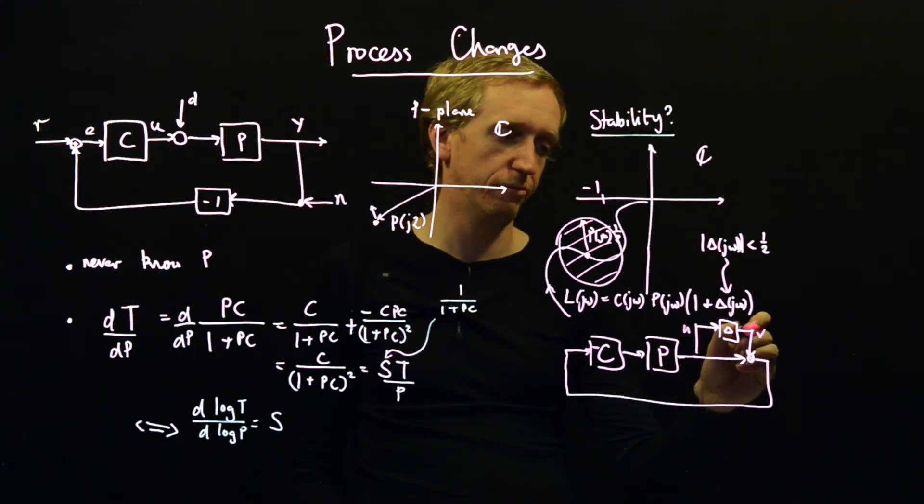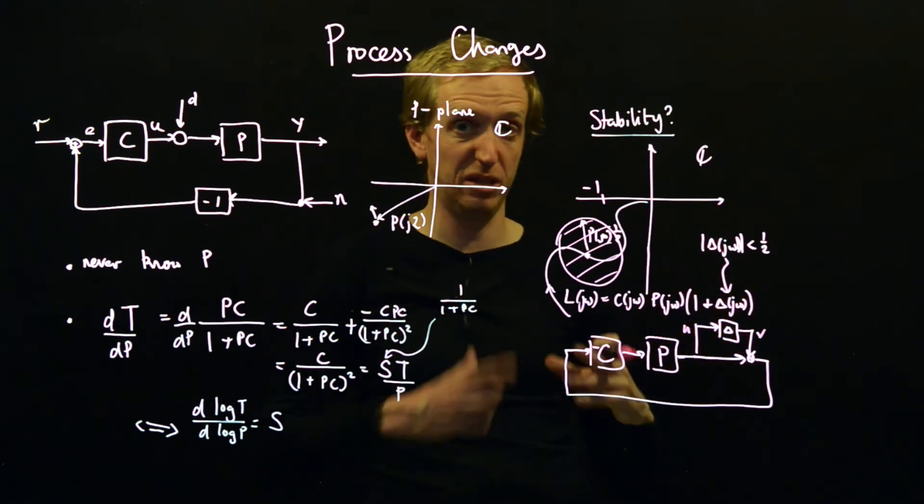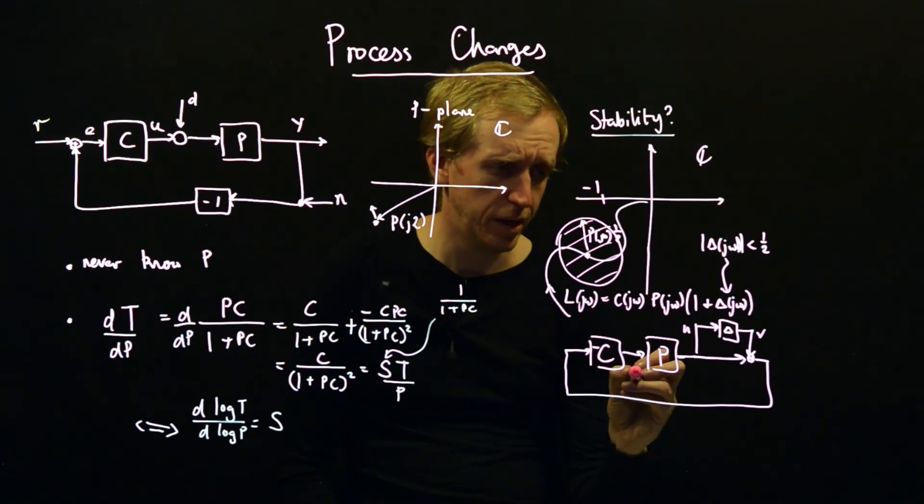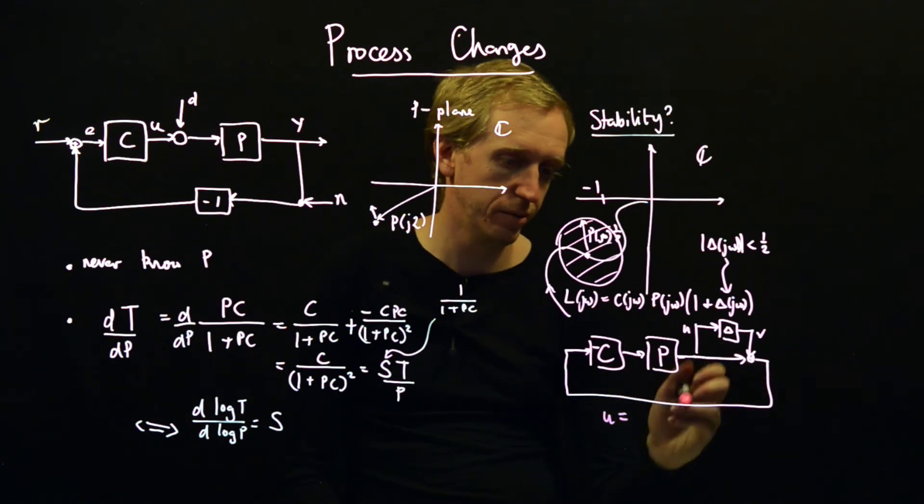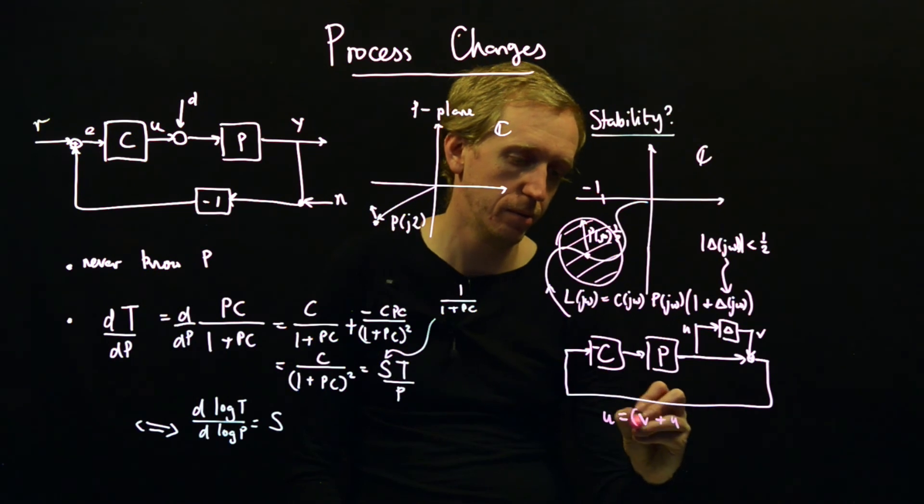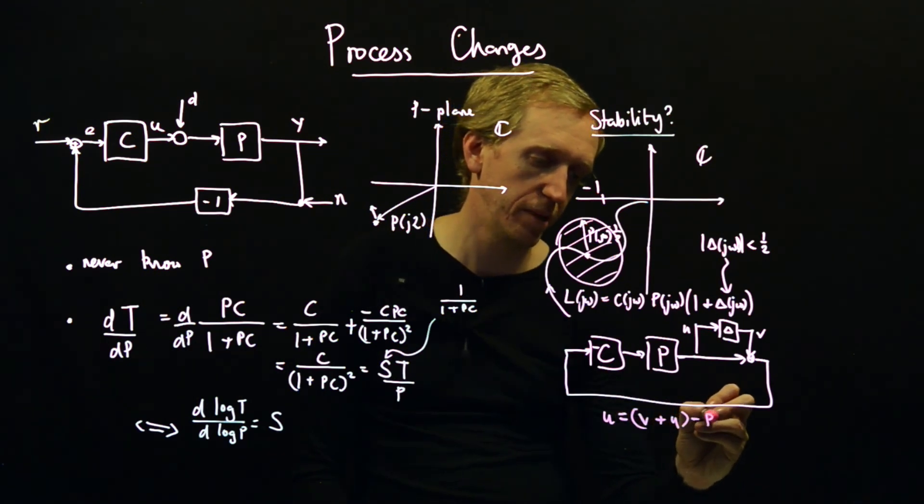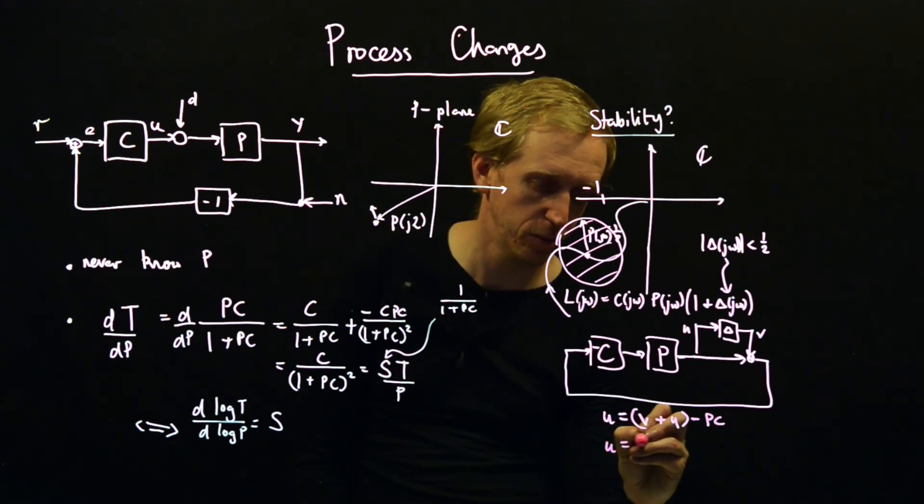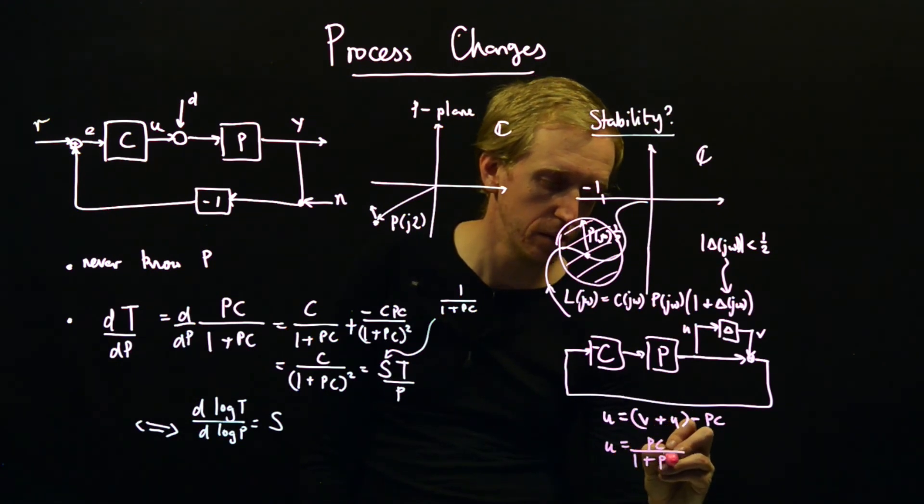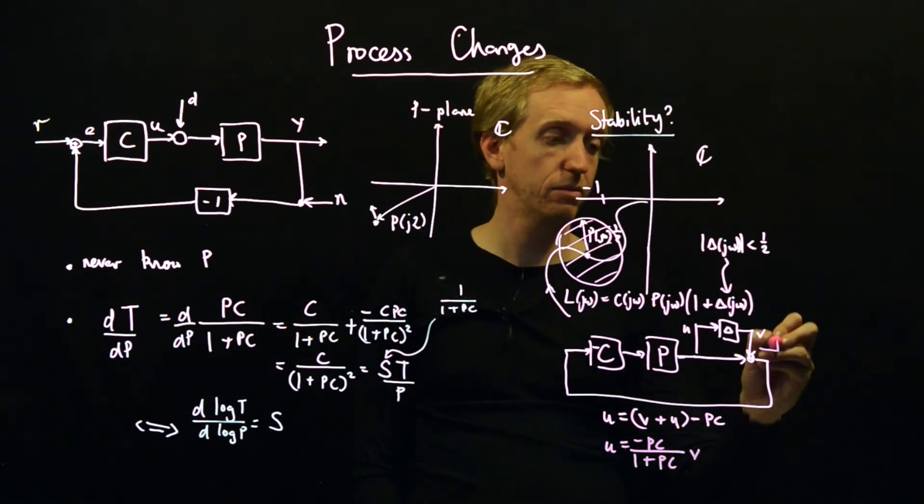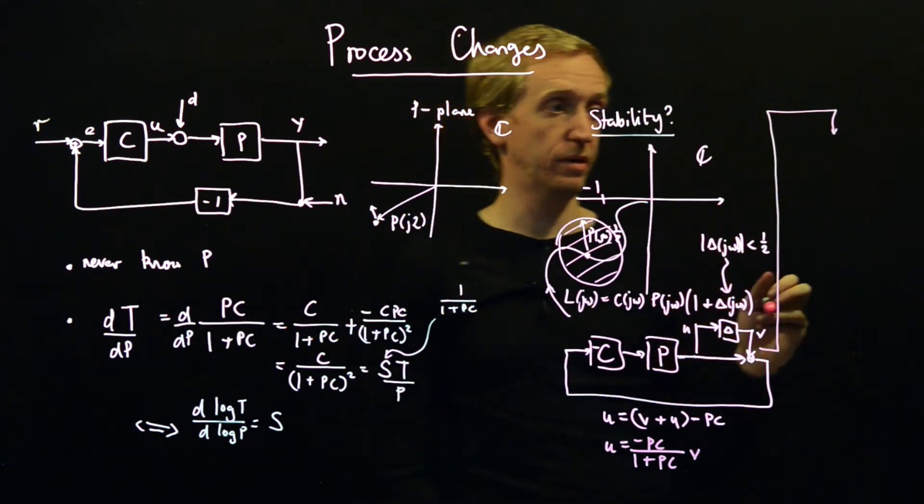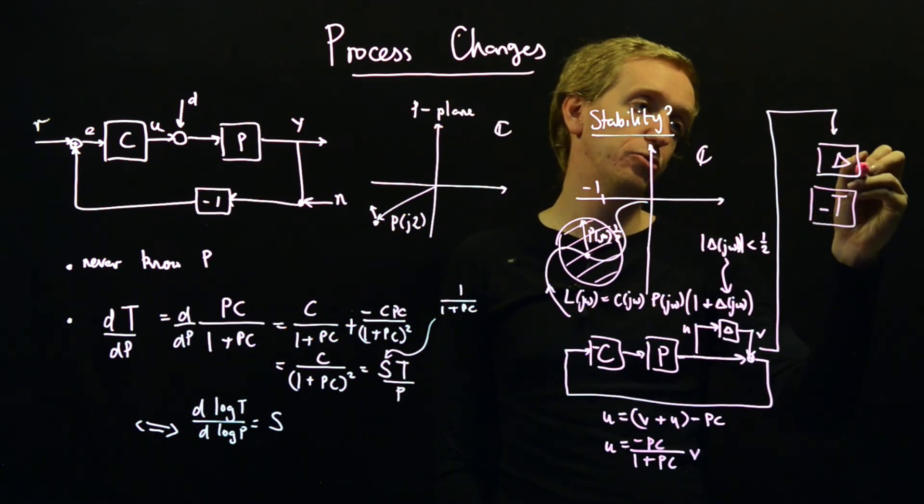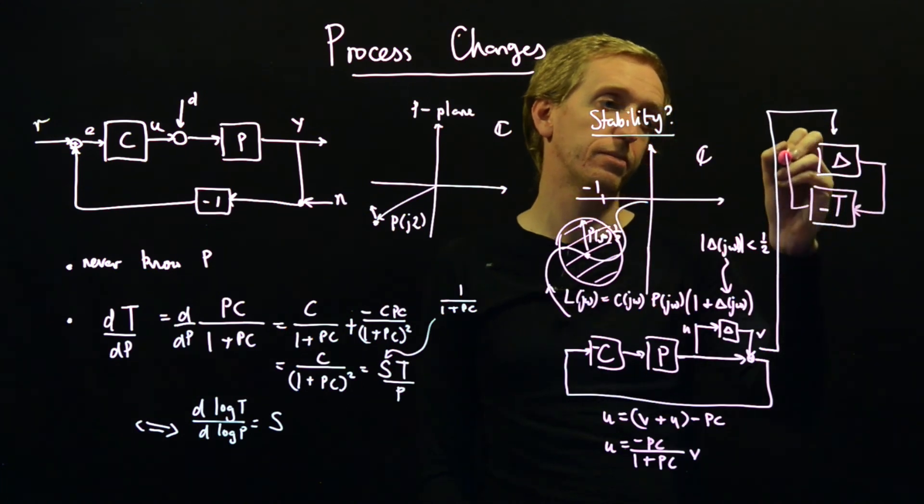So what is, so U is the input to our delta block and V is the output to our delta block. So this transfer function that we don't know, the only thing we know is that it's contained within some size. And so what is U? Well, U is equal to V plus U all multiplied by minus PC. And if I rearrange this, what do I get? I get that U is equal to PC over 1 plus PC with a minus sign, V. So what does that mean? Well, it means that this block diagram is equivalent to delta in negative feedback with the complementary sensitivity function.